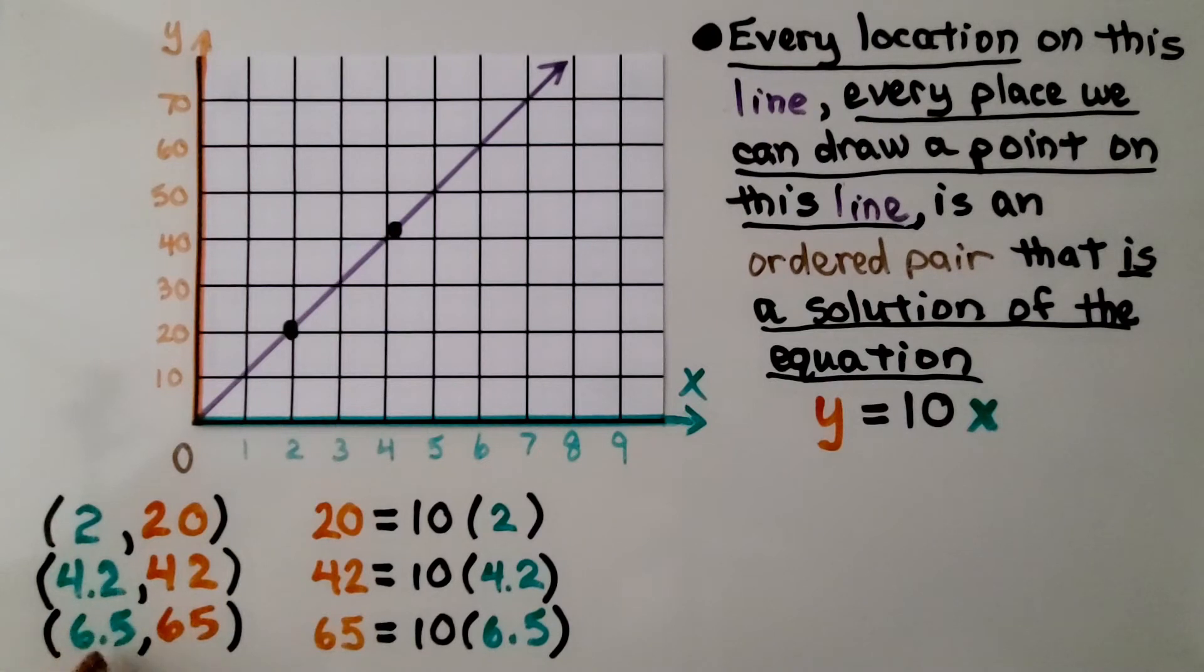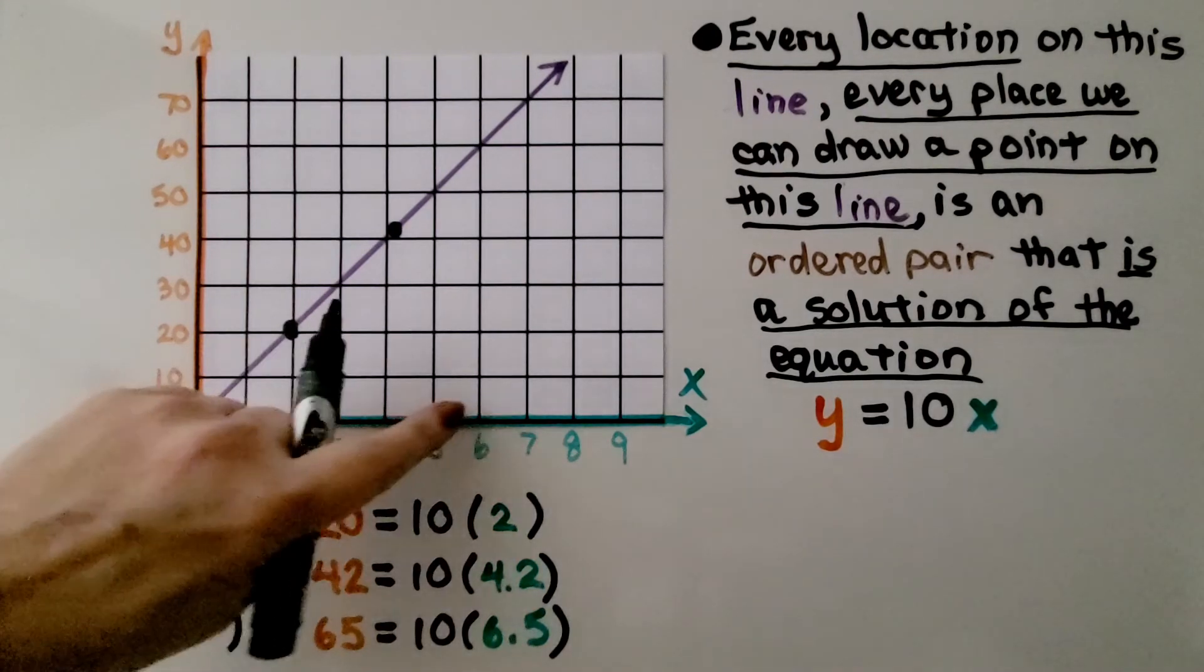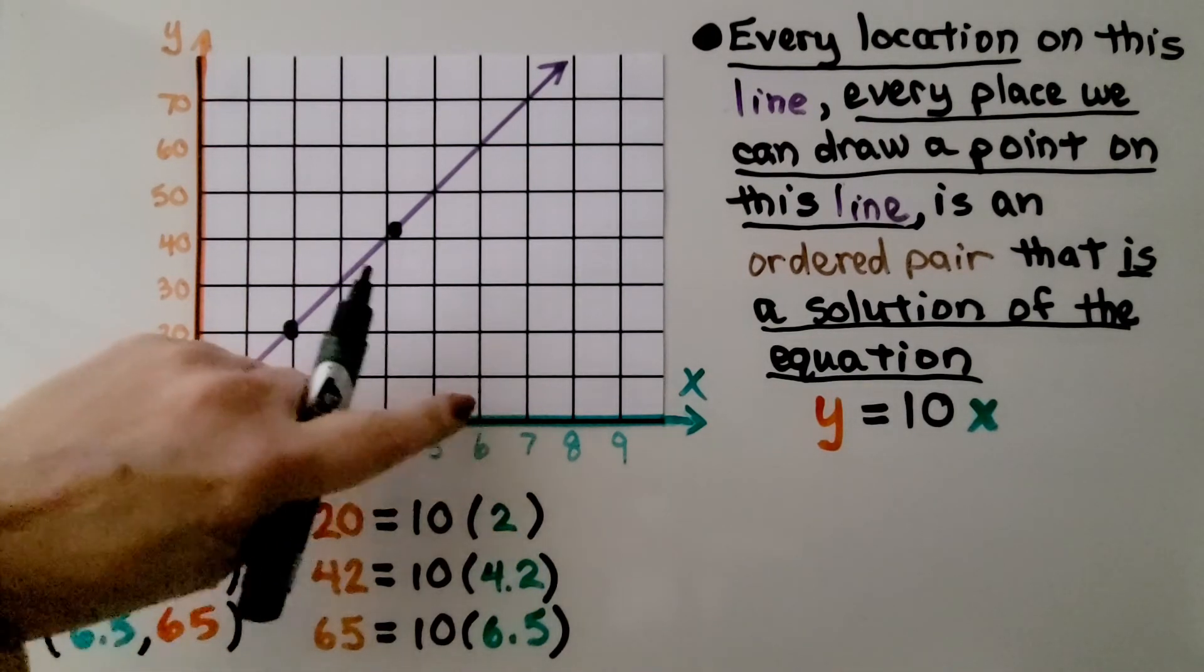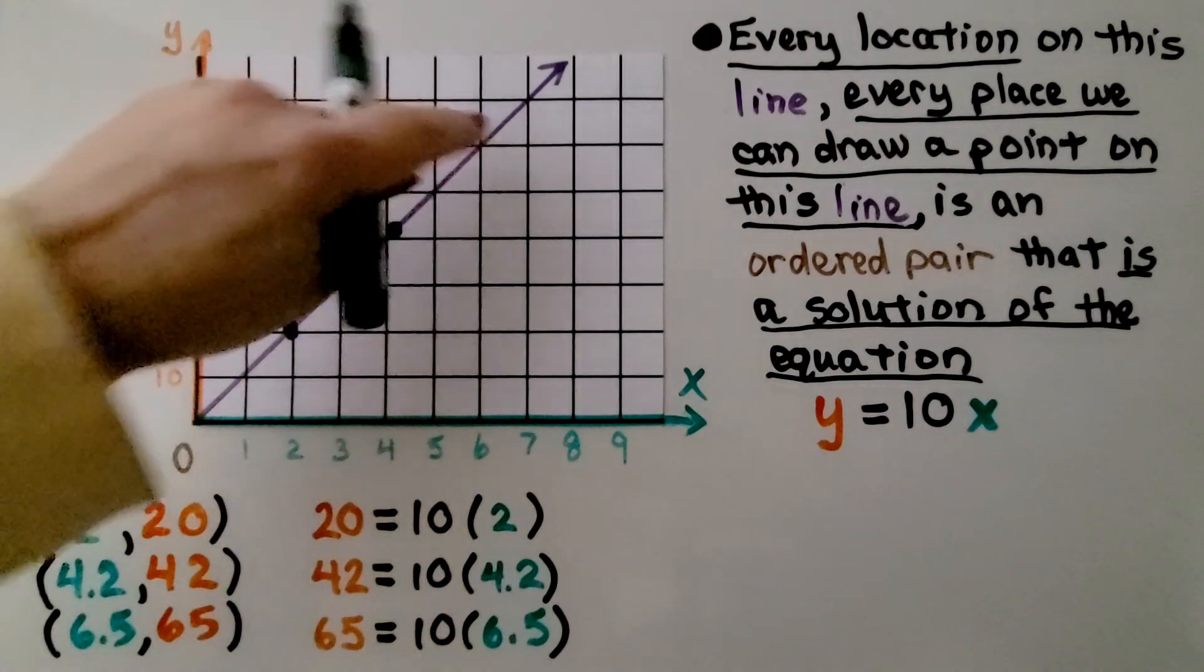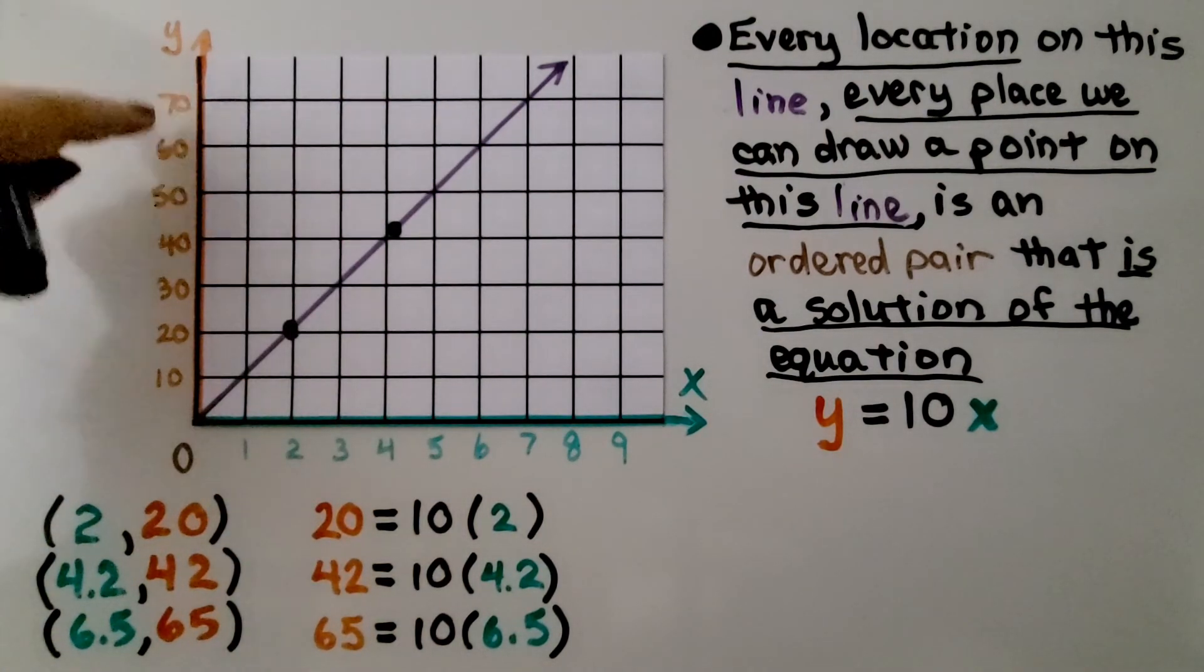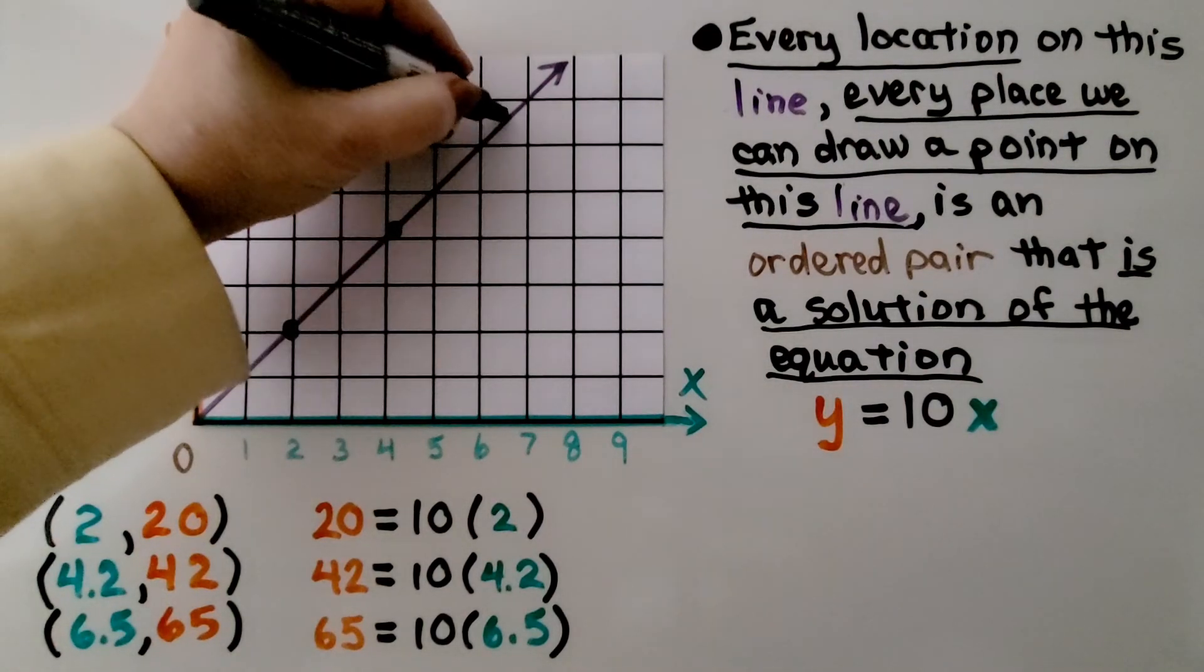What about 6 and 5 tenths and 65? Well, 6 and 5 tenths would be in between 6 and 7. So we would go up and then we'd go to 65 between the 60 and 70 and that would put us right here. It doesn't matter where we go on the line, even into hundredths or thousandths.